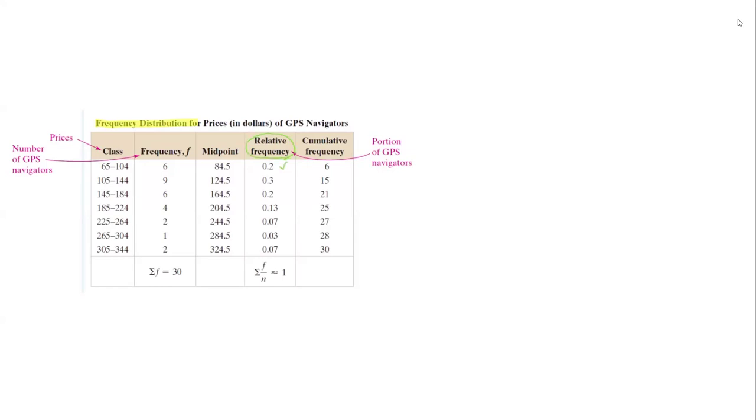Here you have the relative frequency: 20 percent, 30 percent, 20 percent, 13 percent, 7 percent, 7 percent, 3 percent, and the summation is 100 percent or 1. And finally, the cumulative frequency...